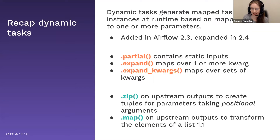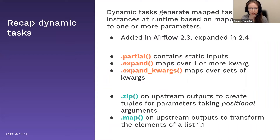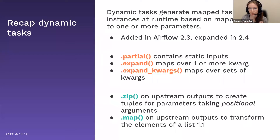Dynamic task mapping was added in Airflow 2.3 and then heavily expanded in Airflow 2.4, which is why we are doing this live. If you are doing dynamic task mapping, there are three functions that are important when you instantiate your task with an operator. .partial takes all the parameters that stay static — if you have a parameter you want to stay the same in each task, you pass it to .partial. Afterwards you add either .expand or .expand_kwargs and pass the parameters that you want to change between the mapped task instances to those functions.